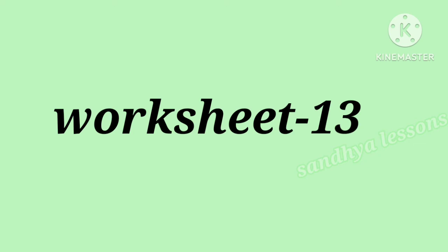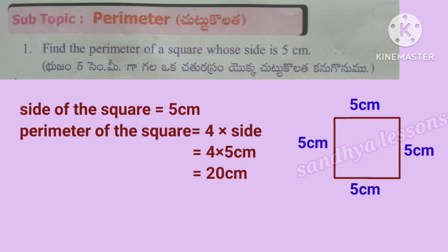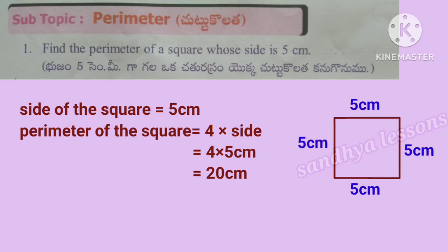Worksheet 13. First problem: find the perimeter of a square whose side is 5 cm. Side of the square equals 5 cm. Formula for perimeter of a square is 4 times the side. So, perimeter equals 4 into 5 cm, which equals 20 cm. Therefore, perimeter of the square is 20 cm.